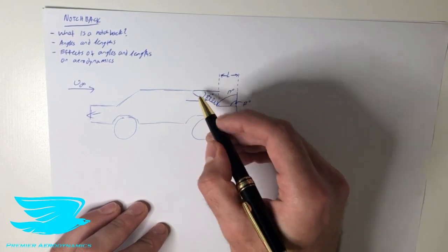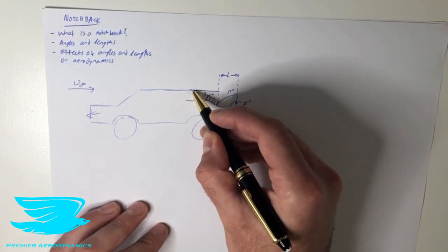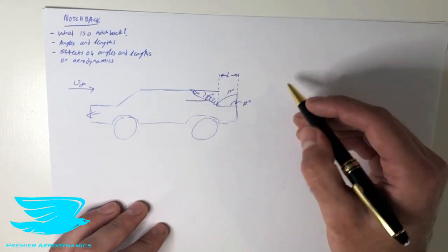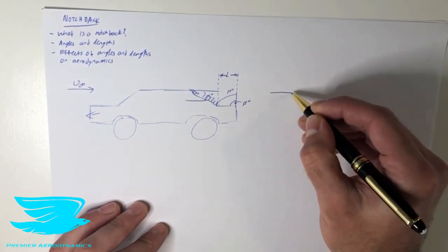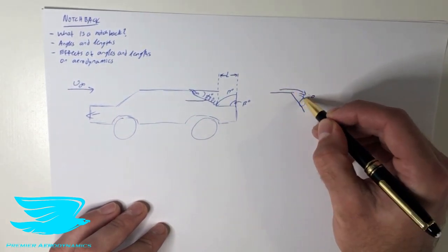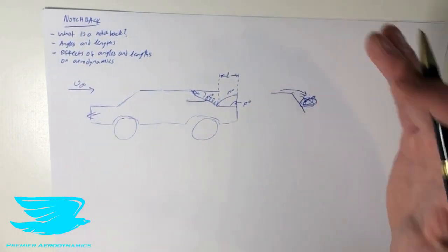So that's what happens with the C-pillar. But with this angle here, it also determines what the flow is doing over this point here. If the angle is too steep, this flow, so if the angle, let's say, is like this, that's alpha, the flow will come along, and it will separate. So we get a lot of recirculation in this zone and a massive wake. That's going to increase drag a lot.